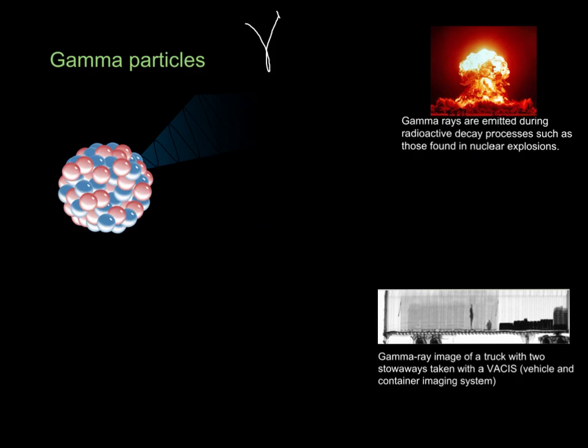Gamma particles are the most difficult to wrap your head around, because it's not undergoing a change in mass or a change in charge. What's happening is it's emitting part of the electromagnetic spectrum, and they're usually emitted alongside other types of decay.